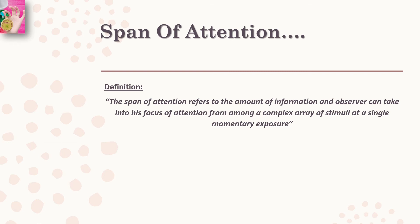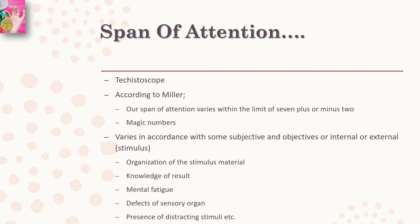The span of attention refers to the amount of information an observer can take into their focus of attention from among a complex array of stimuli at a single moment or exposure. This span is determined by using an instrument called the tachistoscope. On the basis of several experiments, Miller has reported that our span of attention varies within the limit of seven plus or minus two. This is commonly known as the magic number. It means that in a given period of time we can simultaneously attend to a set of five to nine items.